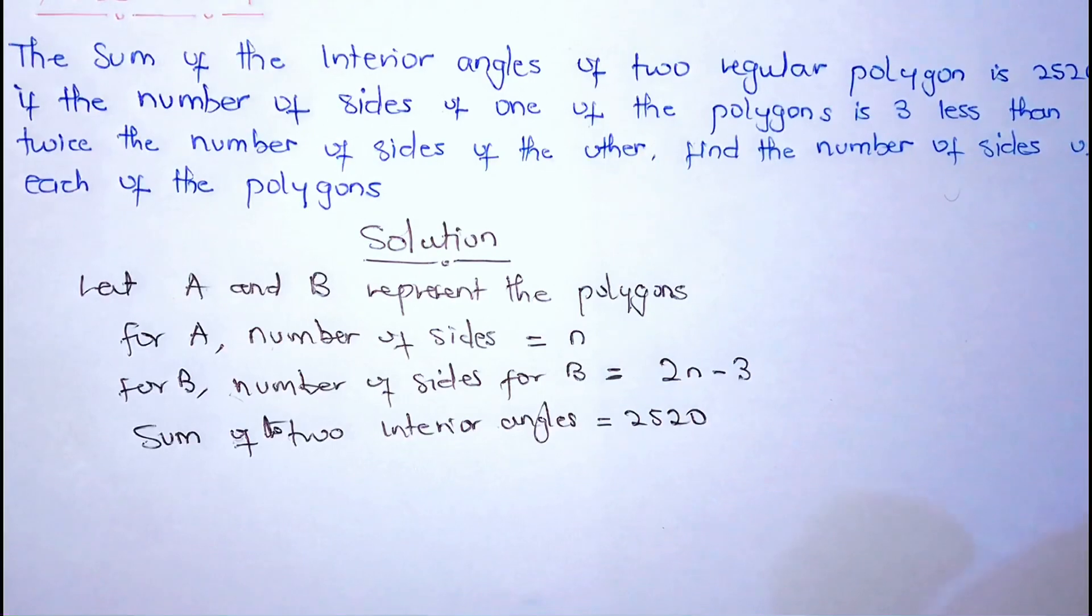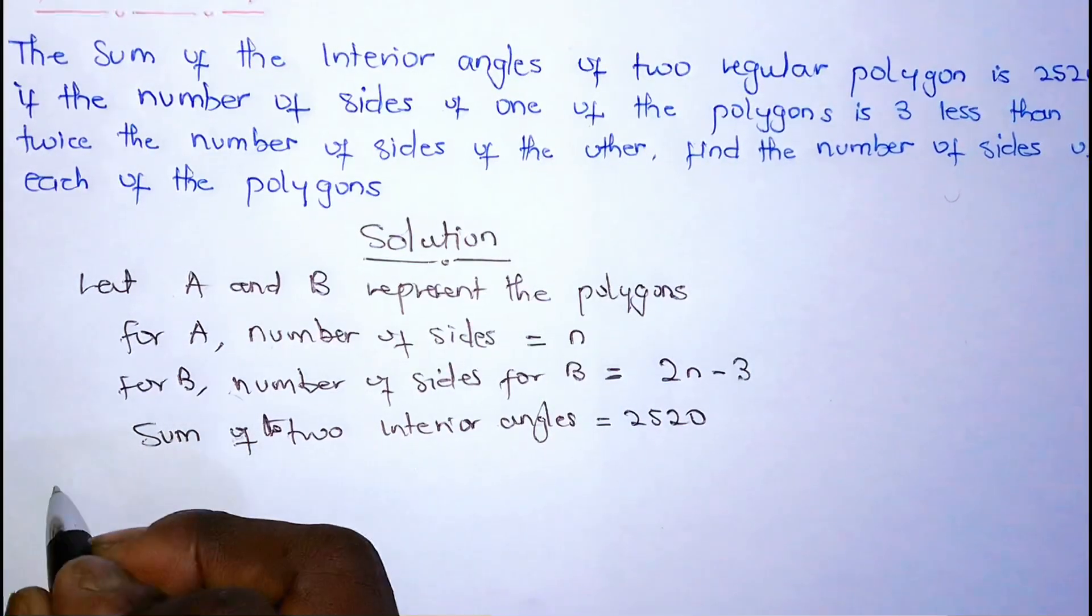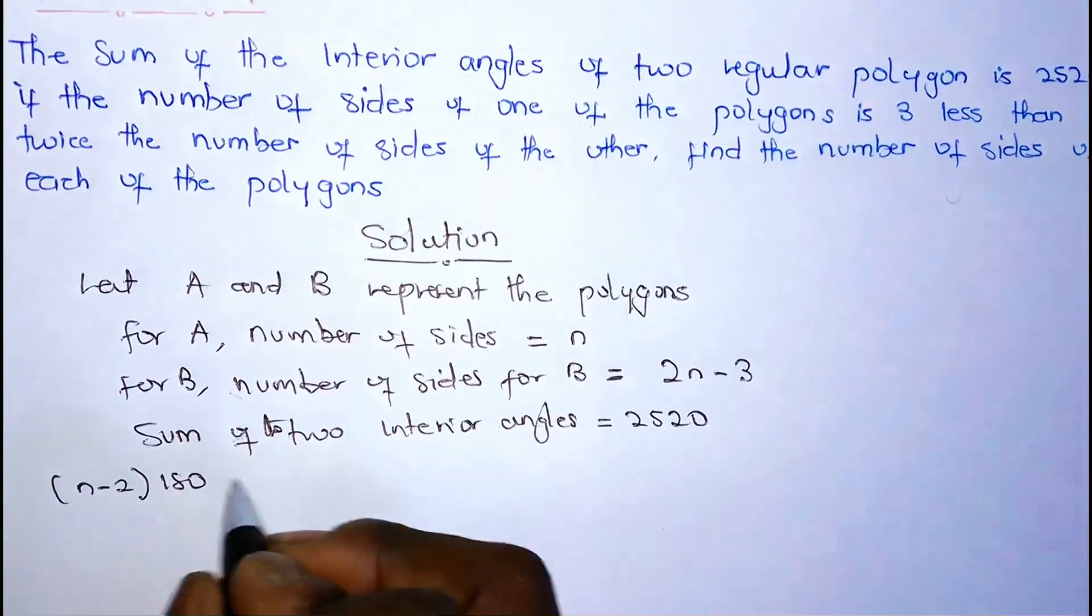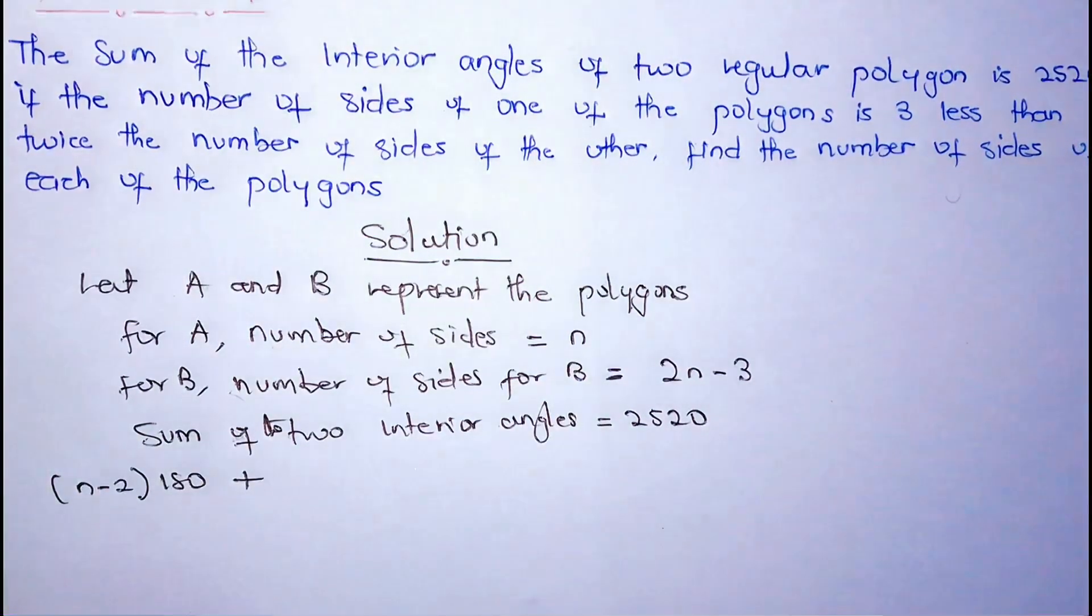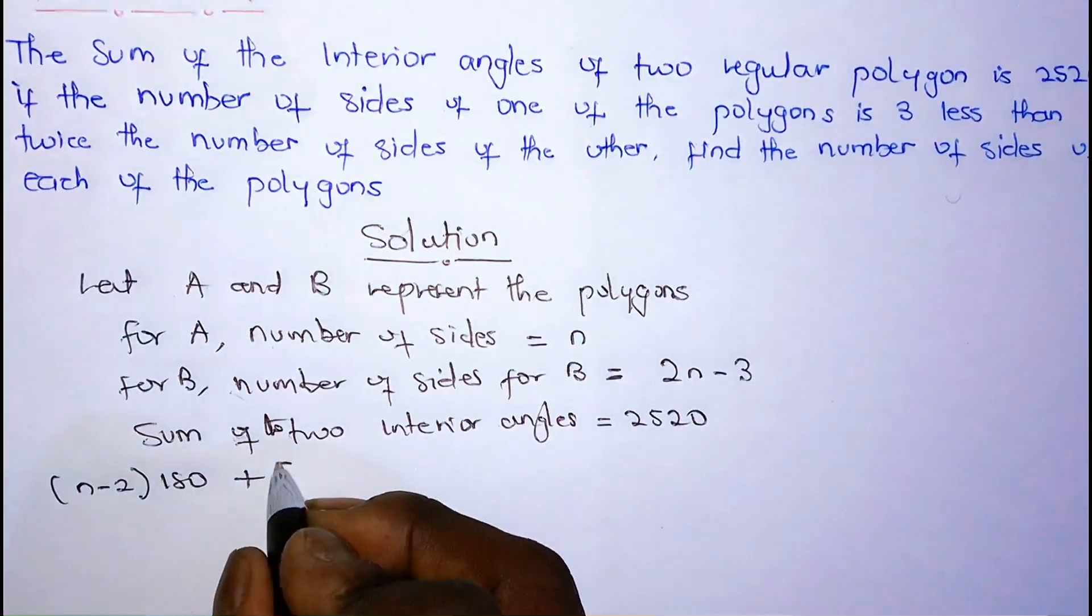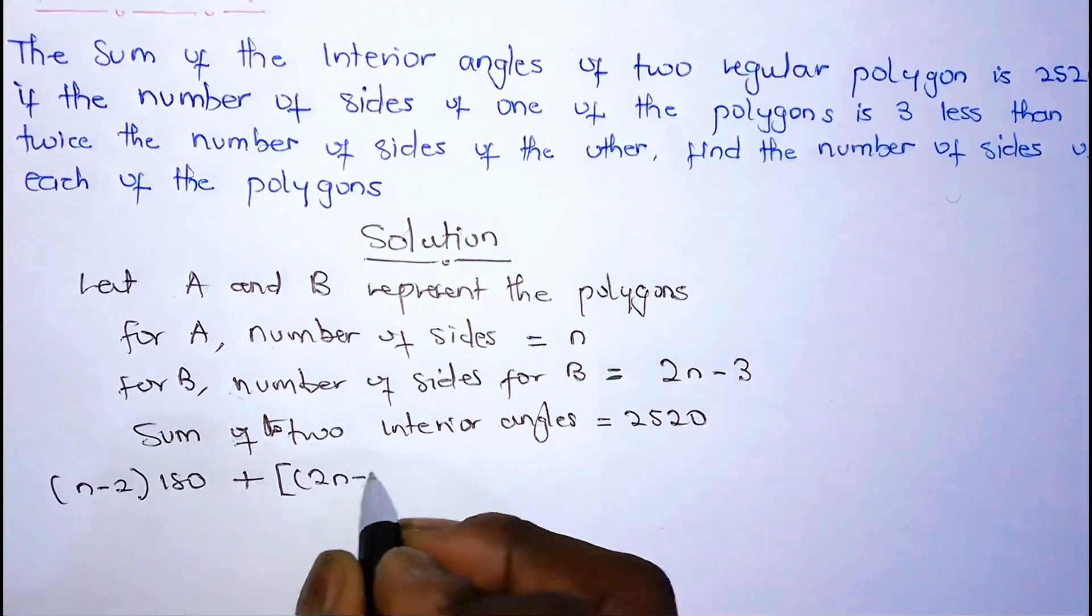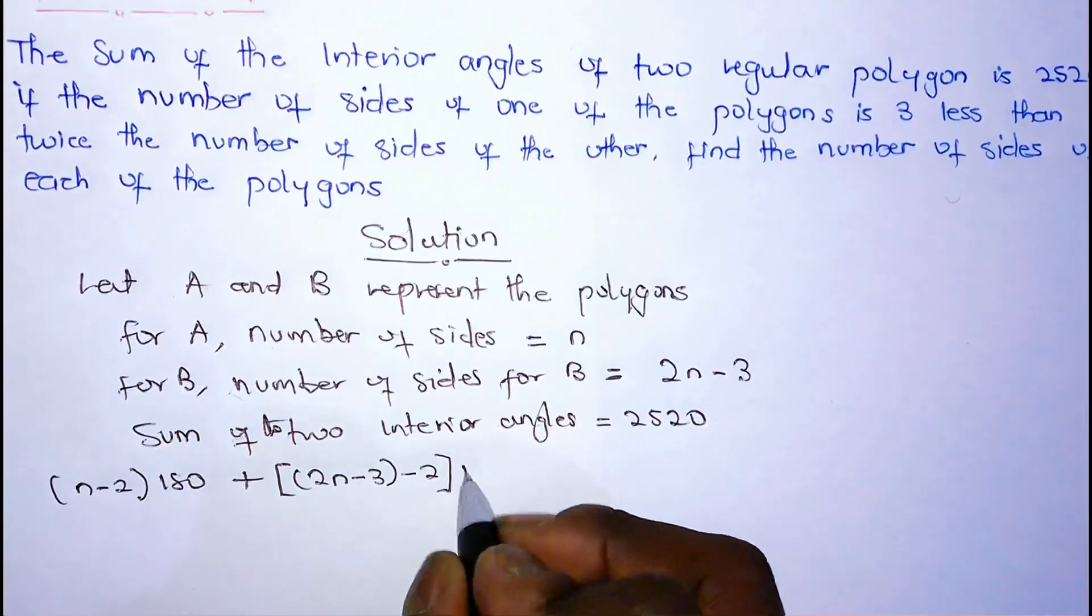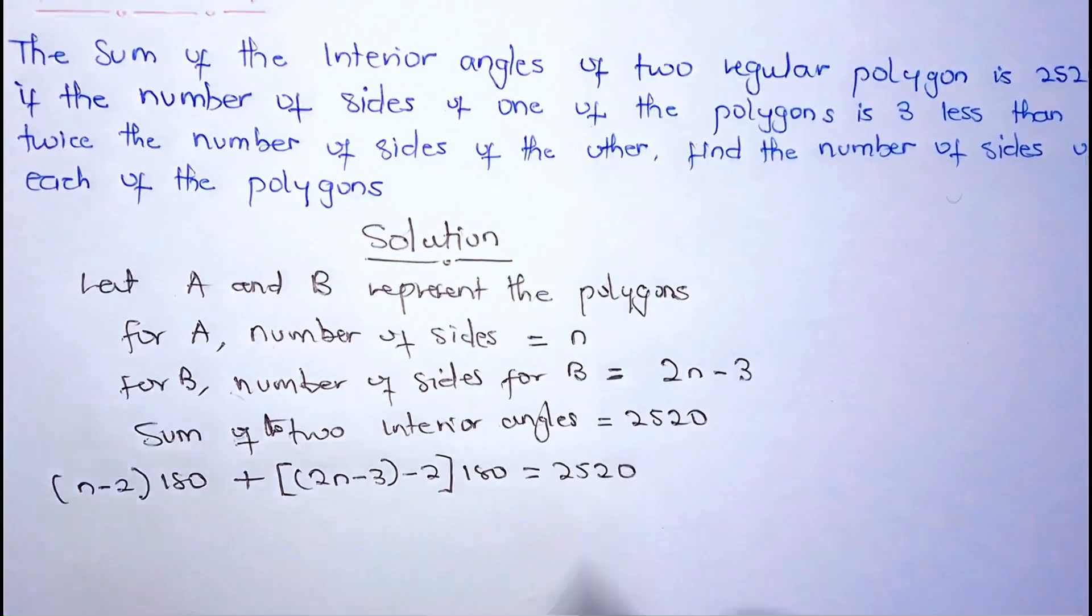Now the sum of interior angles of a regular polygon is given as N minus 2 times 180. So N minus 2 multiplying 180 plus, so this for the first one, plus the second one here...